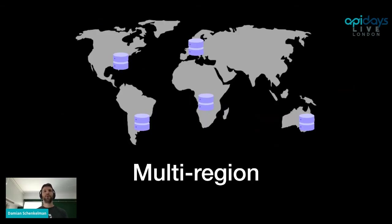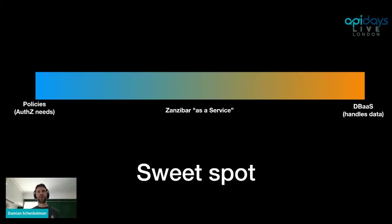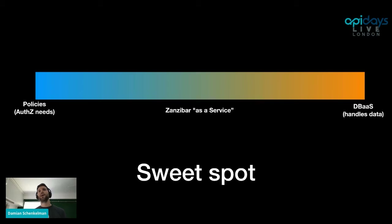Google deploys Zanzibar in a multi-region active-active setup. Each client — all their products like Cloud, Drive, YouTube — goes to the closest region, which minimizes latency. Because it's multi-region, it also increases availability: if one region fails, you can route traffic to the nearest region, trading off some latency. We believe Zanzibar is in the sweet spot between policies — which are flexible but don't handle storage — and database-as-a-service — which requires cluster management and customization for authorization use cases.